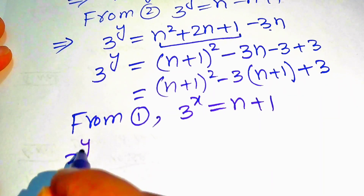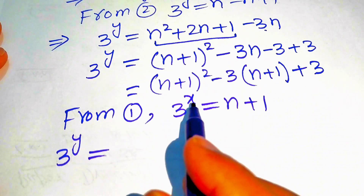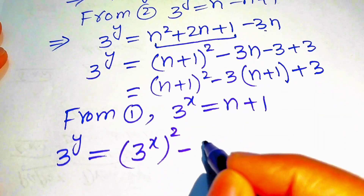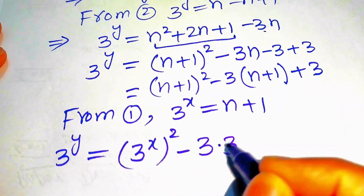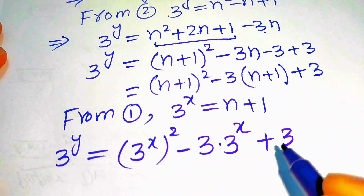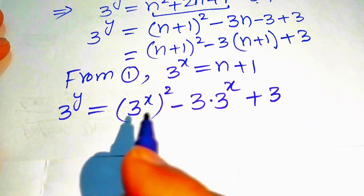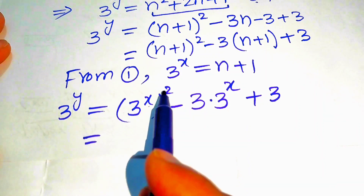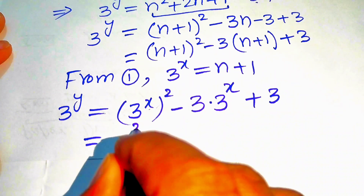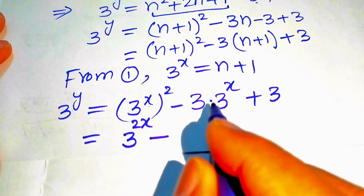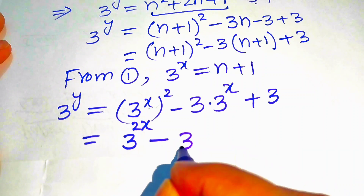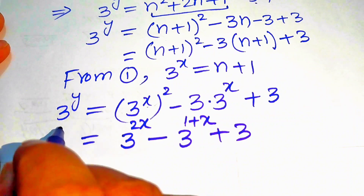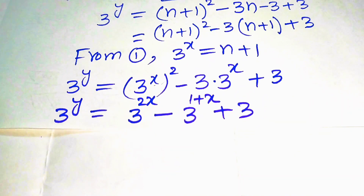After substituting, we get 3 to the power of y equals 3 to the power of x whole squared minus 3 times 3 to the power of x plus 3. Applying the exponential law, the squared term becomes 3 to the power of 2x, and 3 times 3 to the power of x becomes 3 to the power of 1 plus x, giving: 3 to the power of y equals 3 to the power of 2x minus 3 to the power of 1 plus x plus 3.